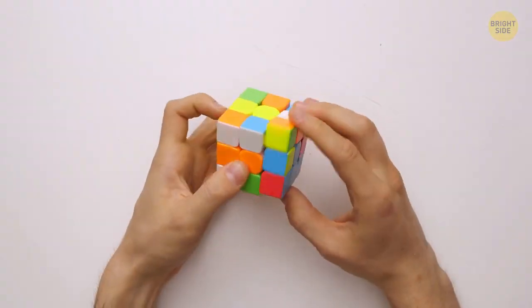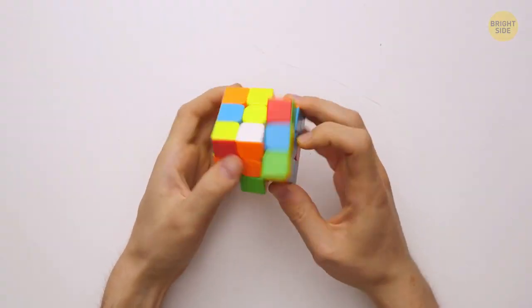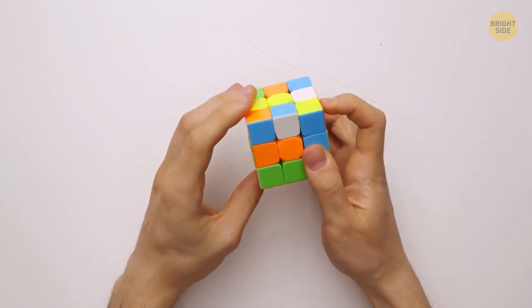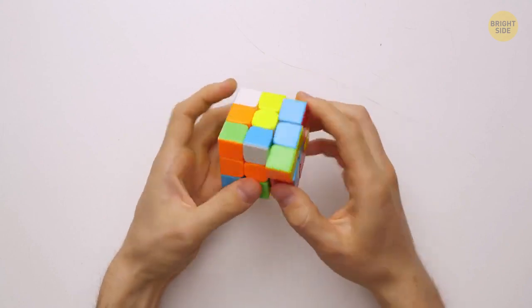Before you continue, it's a good idea to pause the video and practice until you can do all these moves pretty much automatically. It'll help you later on. Okay, so you'll go through 7 stages in today's algorithm.